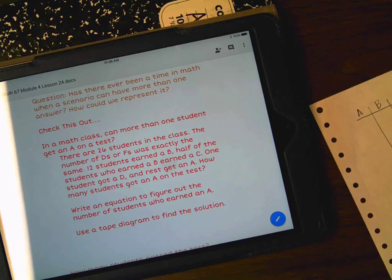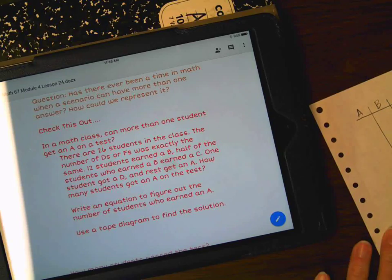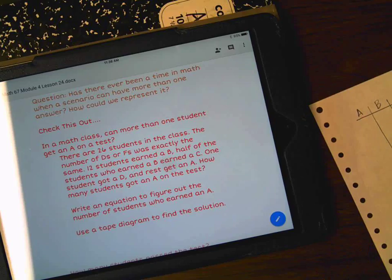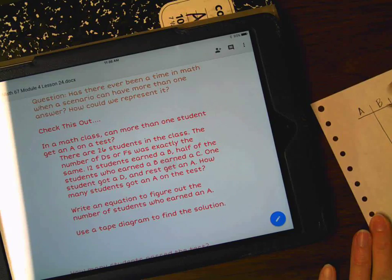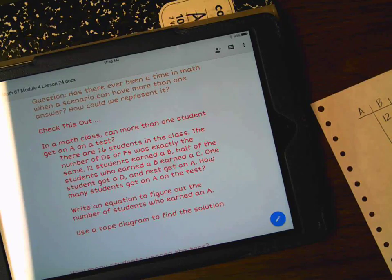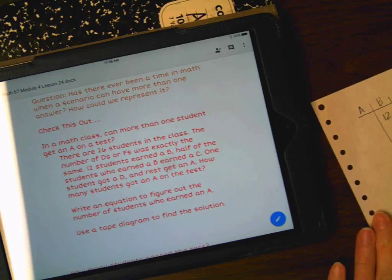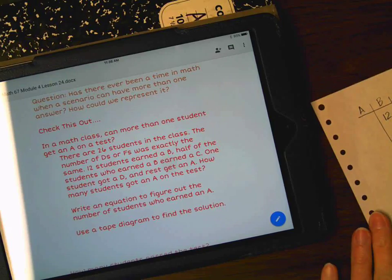It says the number of D's and F's was exactly the same, so D's are equal to F. Then it says 12 students earned a B. So I know I can go to my B column. 12 students earned a B. Then it says half of the number of students who earned a B earned a C. So in the C column, I'm going to put half of B.